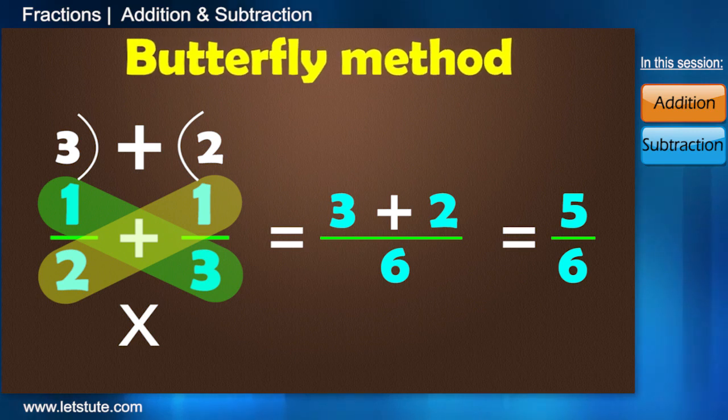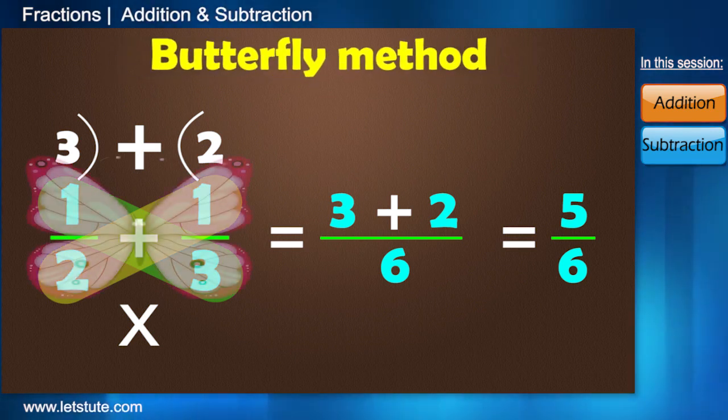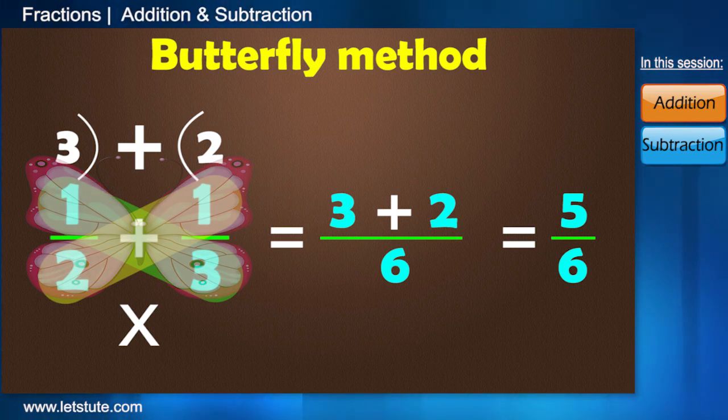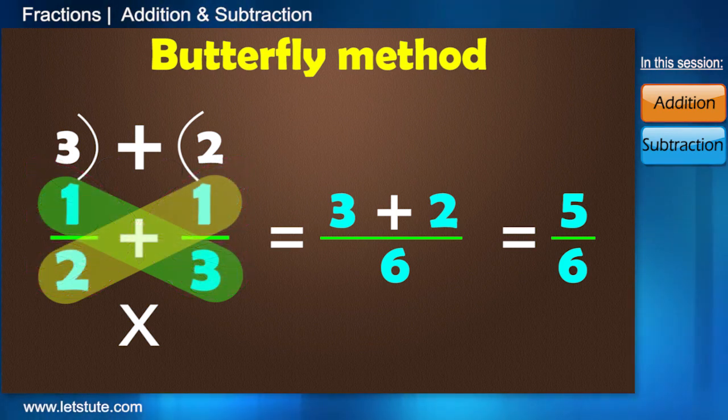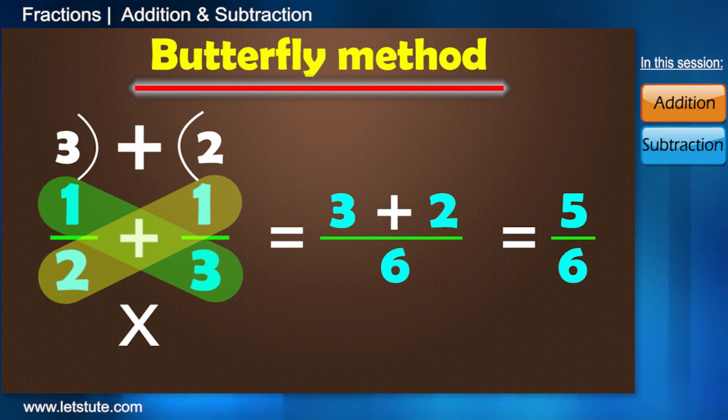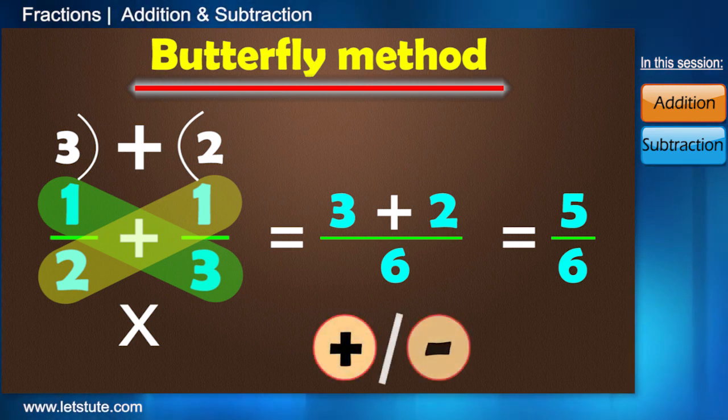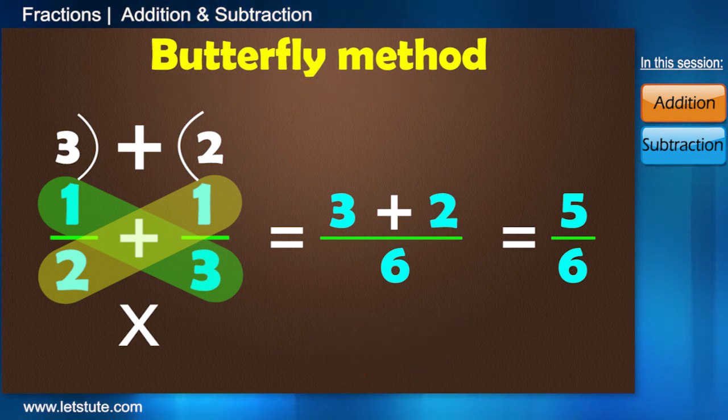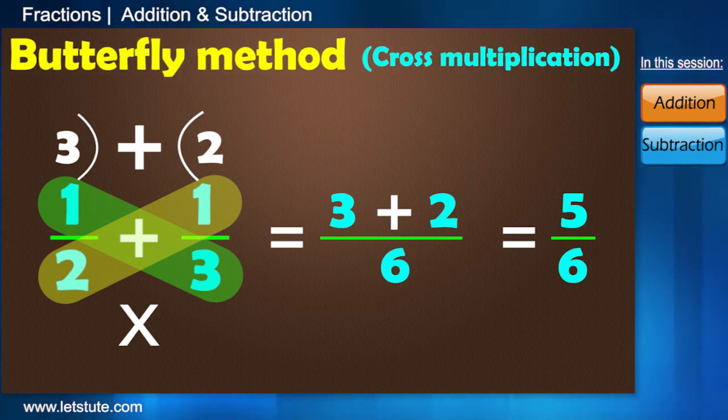This is known as a butterfly method because it looks like a butterfly. And, this will make you remember this method also easily because of the name. But, don't get too much fascinated by the name itself. Do remember the logic too. Now, using this method, you can either add or subtract any two fractions. This is also known as cross multiplication method.